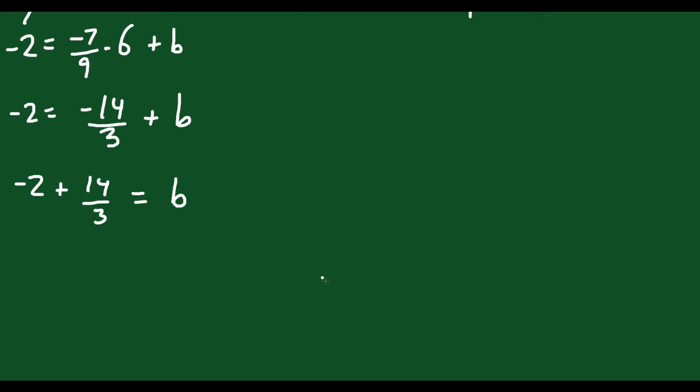Okay. How do I add these together? Well, you have to remember your fraction rules. Right. Negative 2 is the same as negative 6 over 3. And this way you have a common denominator between the two numbers. Negative 6 plus 14. That's the same as 14 minus 6. Which is just 8 over 3 is equal to b.